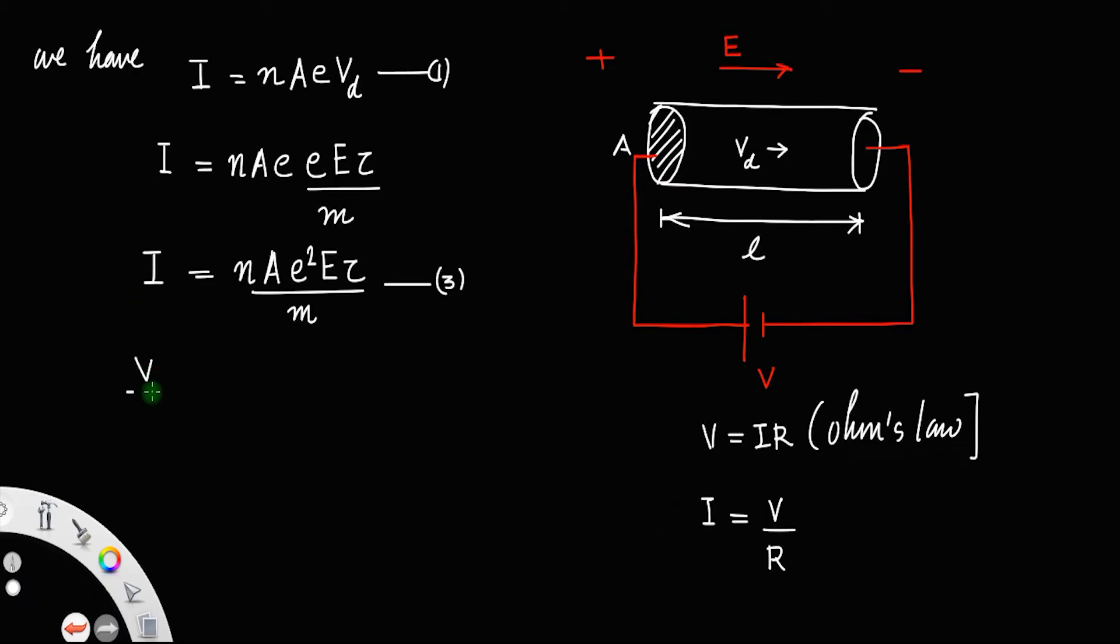So I equal to V divided by R is equal to nAe²Eτ divided by m. But you know the voltage V will be electric field into length. Also, the resistance of the conductor R is equal to ρL divided by A. We know these two values.